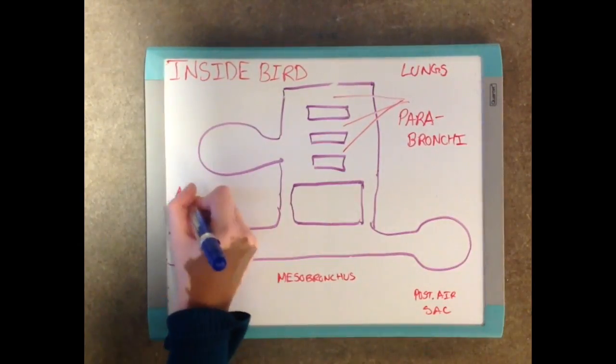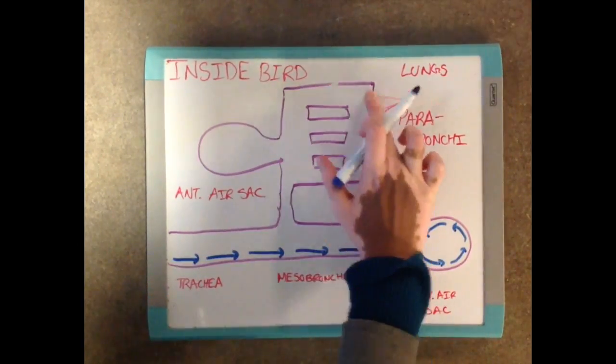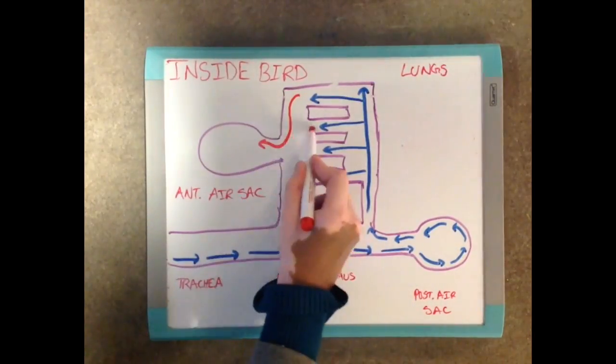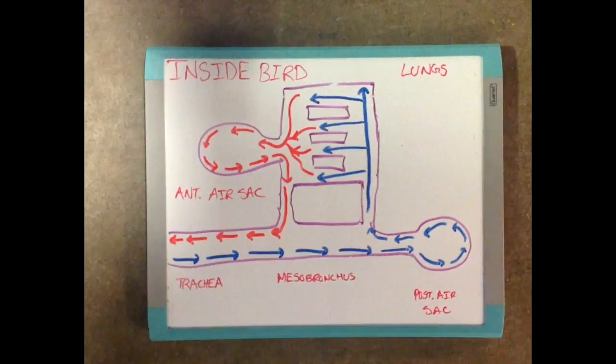Let's review this process, but in a bigger picture. So basically air moves in from the outside into the posterior air sac, which then pumps air into the lungs. This air then moves from the lungs to the anterior air sac, then out of the air sac through the trachea to the outside.